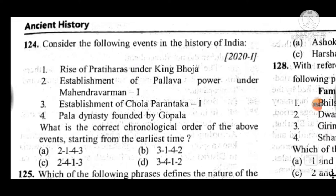Question 124: Consider events in the history of India and find their correct chronological order — rise of Pratiharas under King Bhoja; establishment of Pallava power under Mahendravarman I; establishment of Chola Parantaka I; and Pala dynasty founded by Gopala. Answer is C — the correct order is: first, establishment of Pallava power under Mahendravarman I; then Pala dynasty founded by Gopala; then rise of Pratiharas under King Bhoja; and last, establishment of Chola Parantaka I.